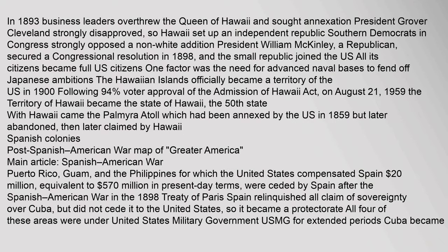In 1893, business leaders overthrew the Queen of Hawaii and sought annexation. President Grover Cleveland strongly disapproved, so Hawaii set up an independent republic. Southern Democrats in Congress strongly opposed a non-white addition. President William McKinley, a Republican, secured a congressional resolution in 1898, and the small republic joined the U.S.; all its citizens became full U.S. citizens. One factor was the need for advanced naval bases to fend off Japanese ambitions. The Hawaiian Islands officially became a territory of the U.S. in 1900, following 94% voter approval. On August 21, 1959, Hawaii became the 50th state.